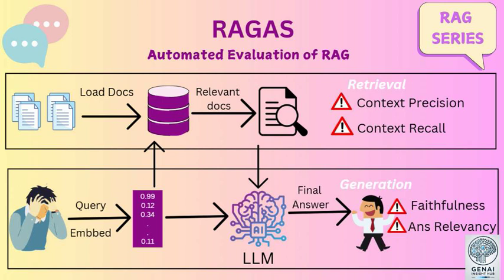So it's like having an AI research assistant who can instantly access a massive library of knowledge. That's pretty powerful. But evaluating these RAG systems can be tricky — how do you measure if the AI is actually using the information correctly and not just cherry-picking data to support its own biases?